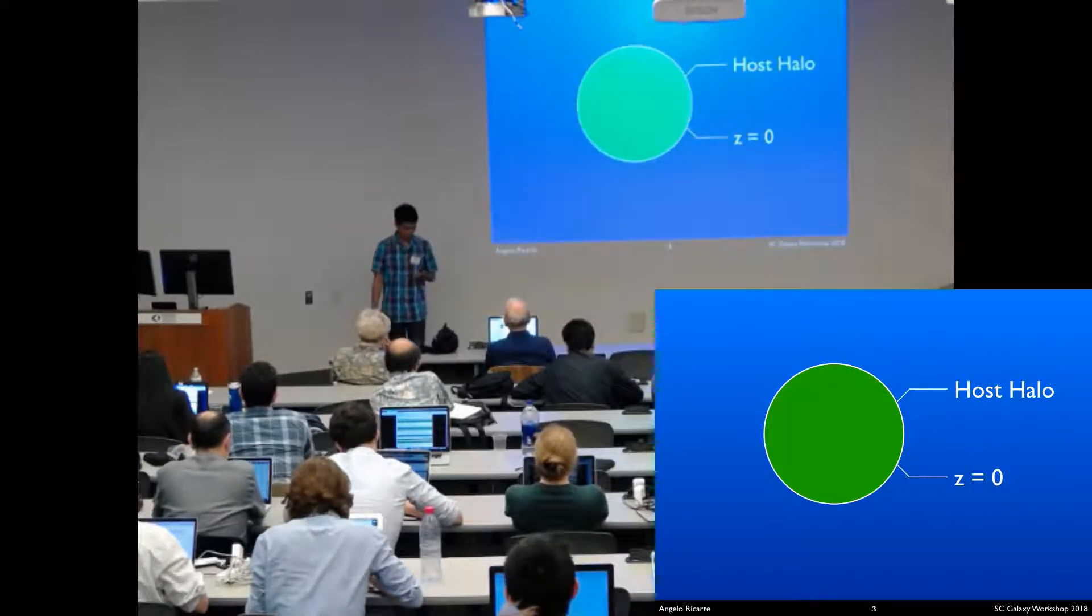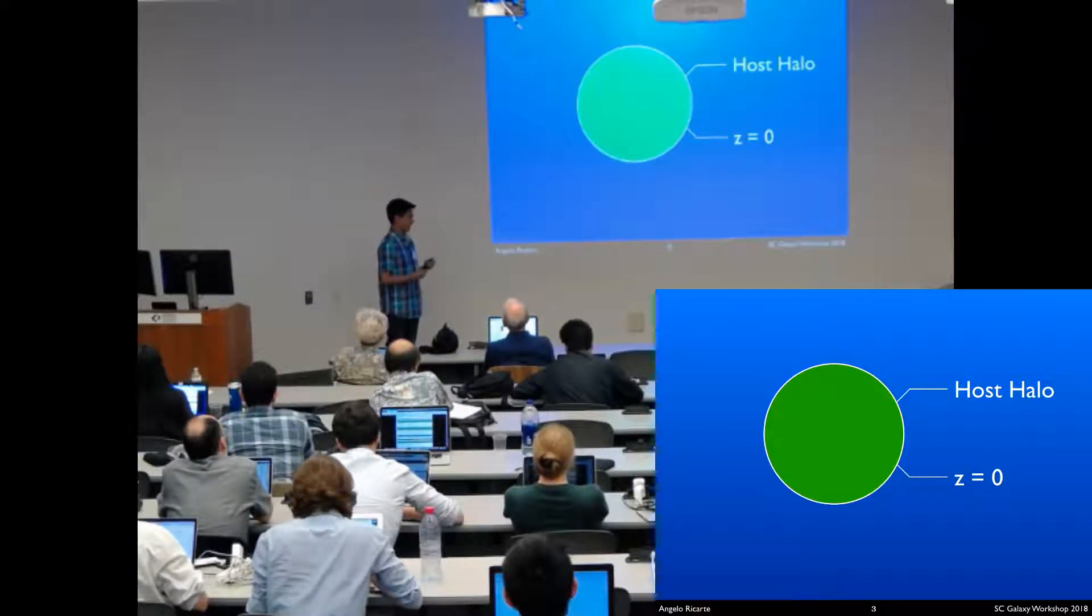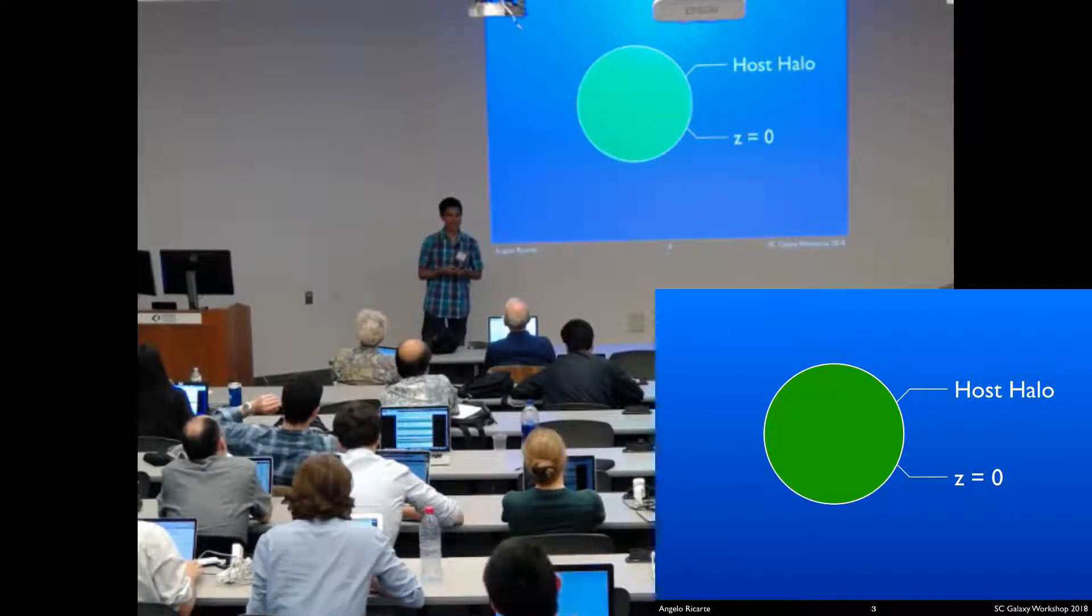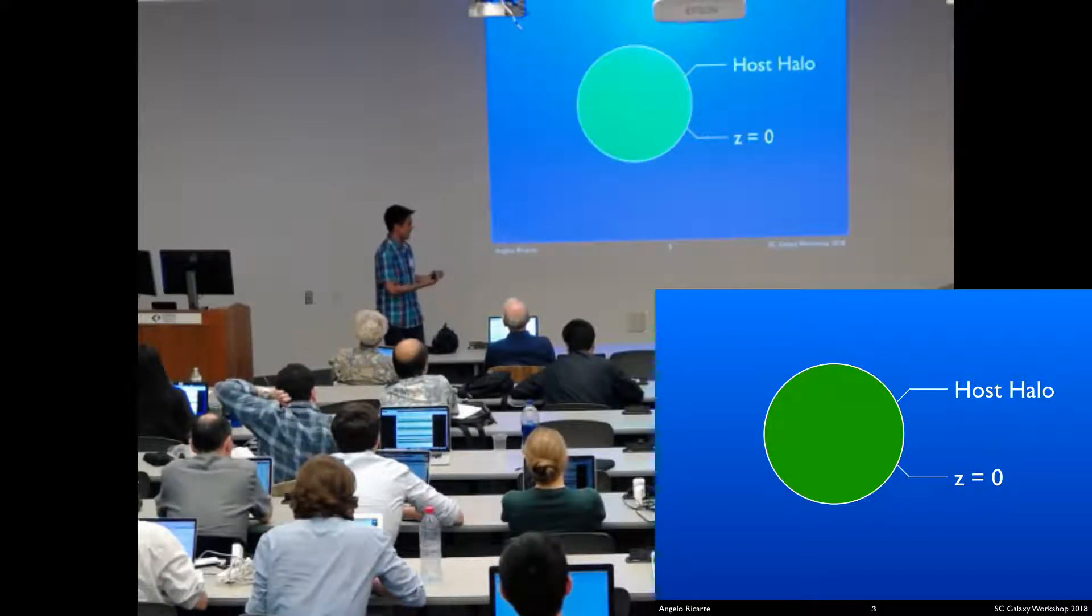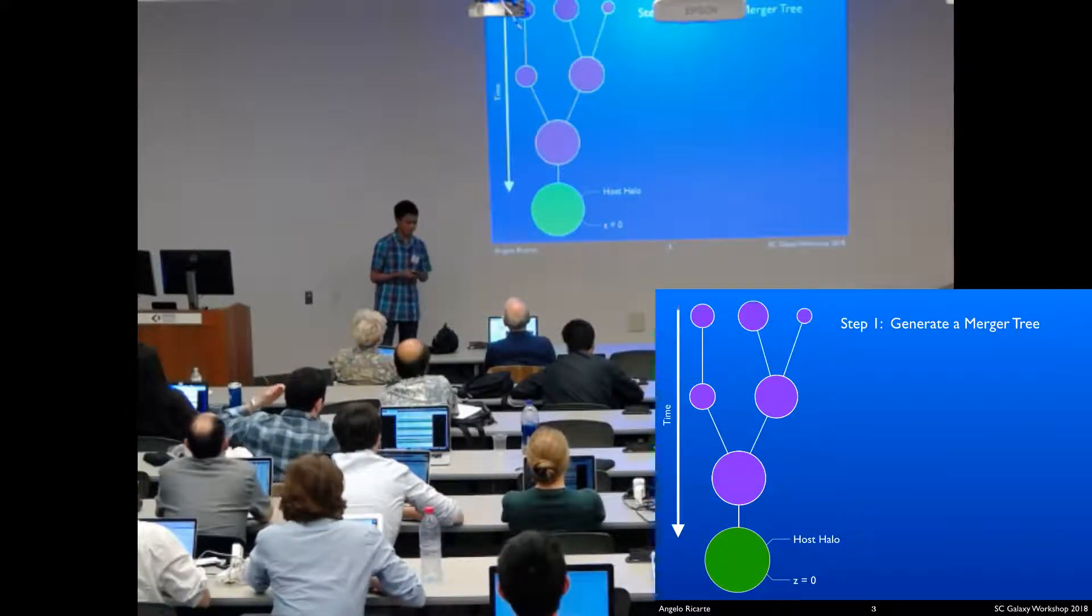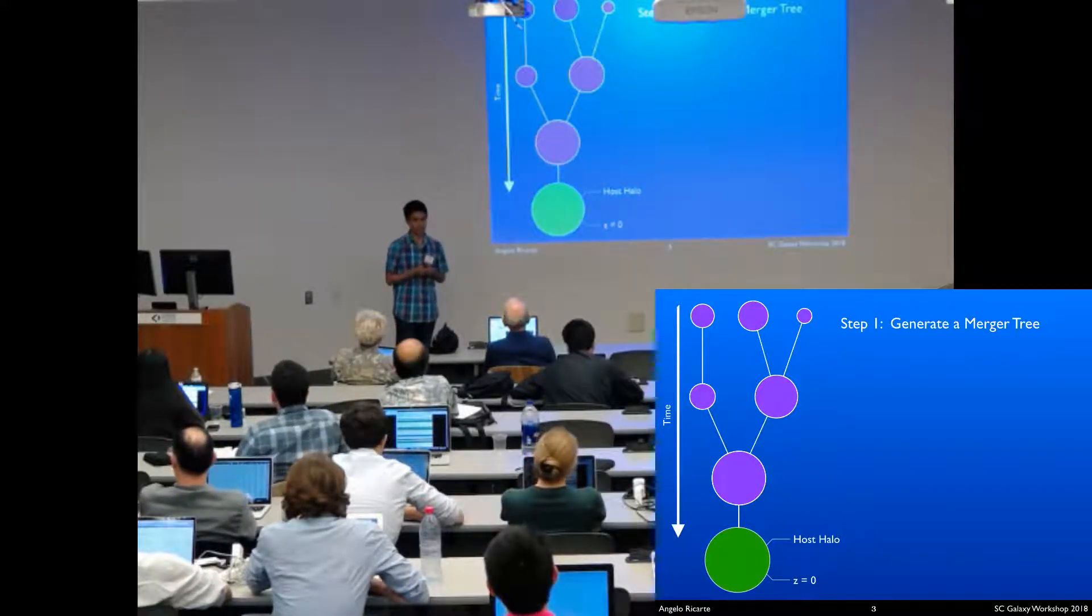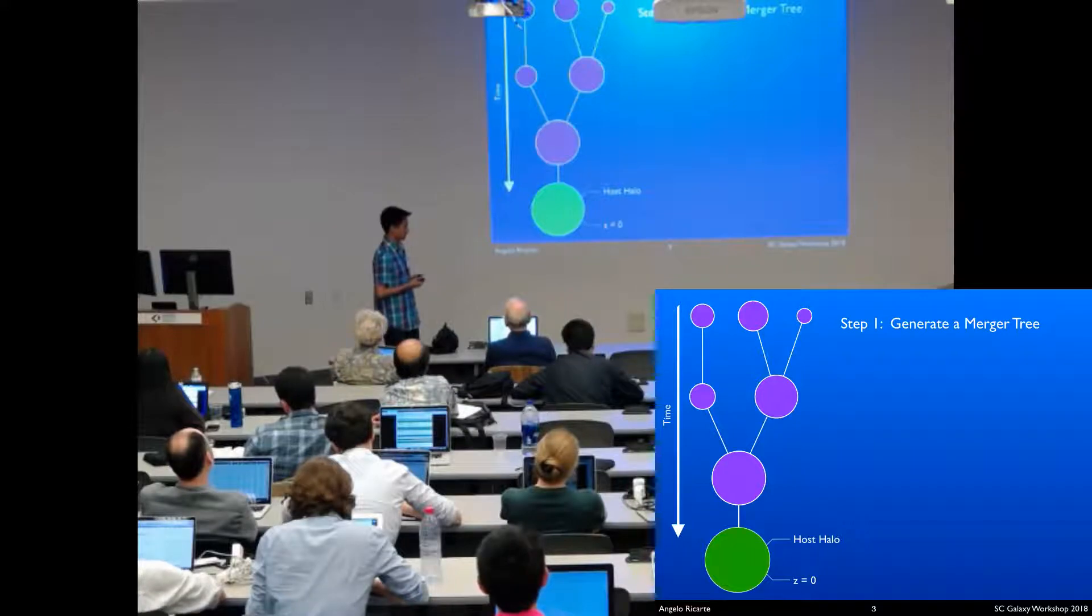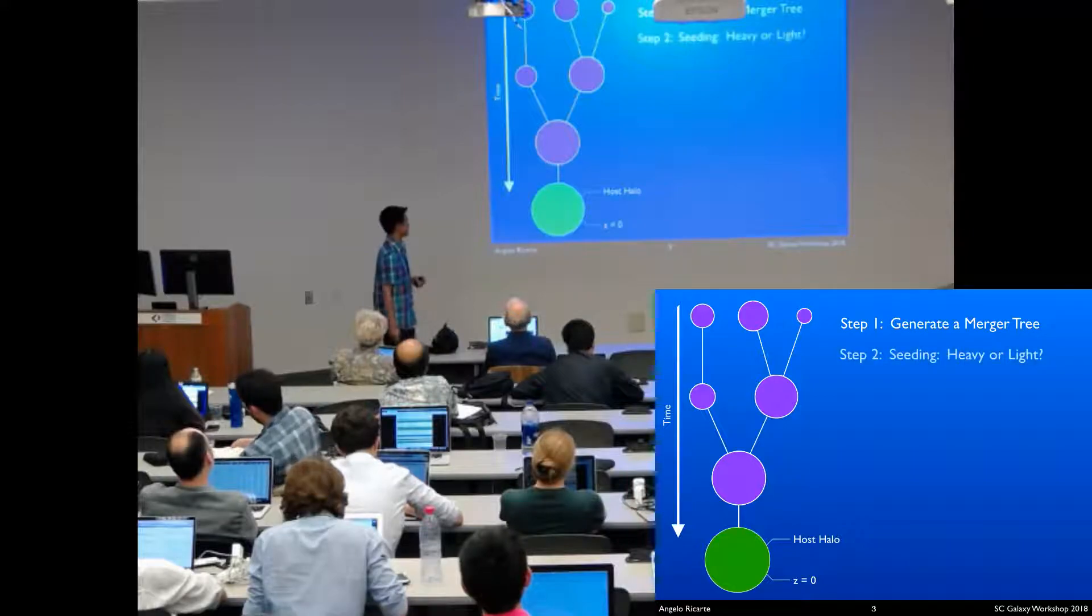It's important to understand the ingredients that go into this model for you to take anything I say seriously. Here I have a little animated cartoon about how we try to assemble a black hole that exists in a host halo of some mass by redshift zero. Under the assumption of black hole and host galaxy coevolution, the first thing I want to know is how this host halo formed its mass over cosmic time. Step one is to generate that merger tree going out to redshift 20, resolving the halos in which the first seeds form. Since we're interested in black holes, that seeding is the next step.